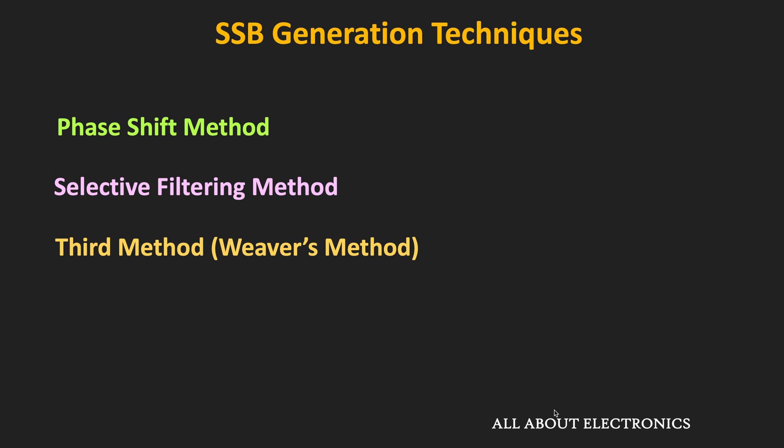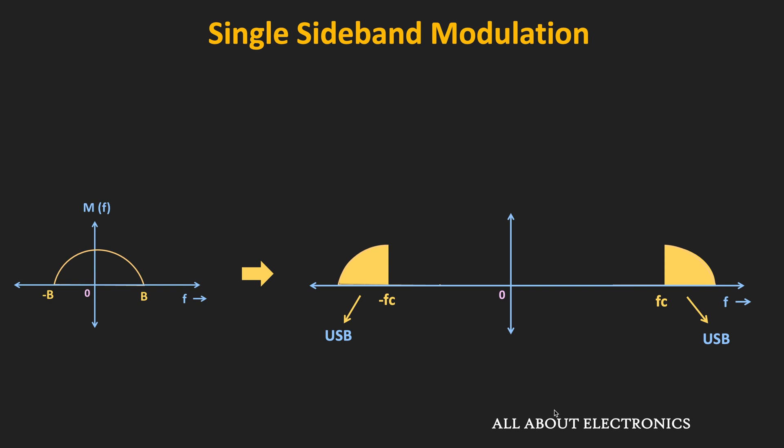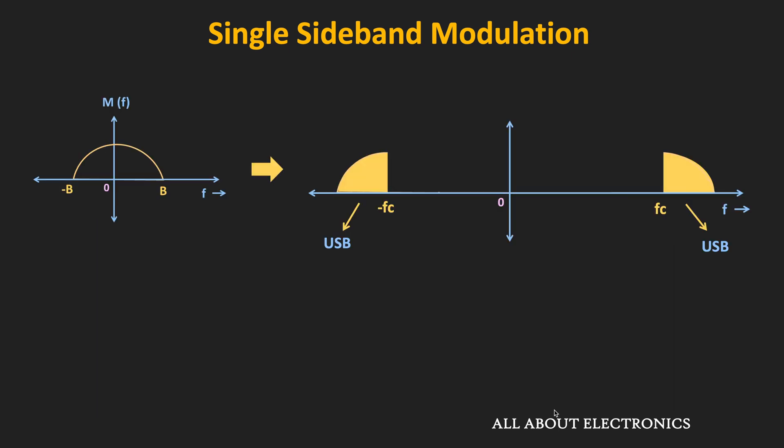In this video, we will learn about the first two methods, and in the next video we will see the third method. As we have seen in the previous video, in single sideband modulation, one of the two sidebands is suppressed and only one is transmitted — either only the lower sideband or the upper sideband. We have also derived the mathematical expression of this single sideband modulation.